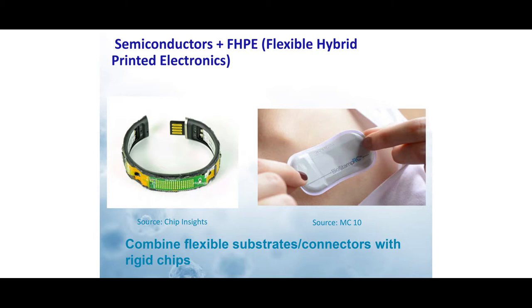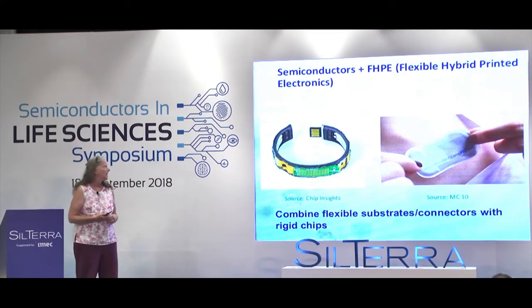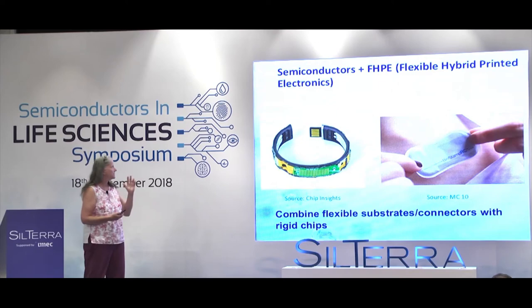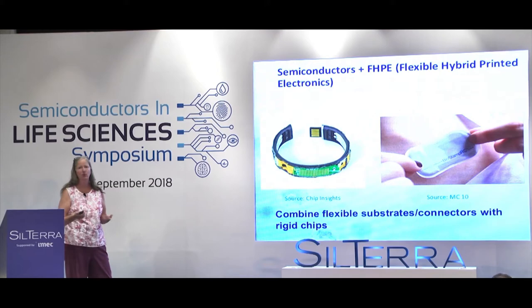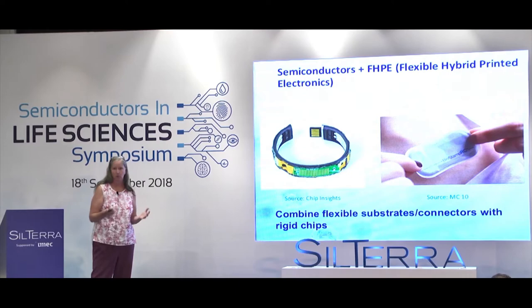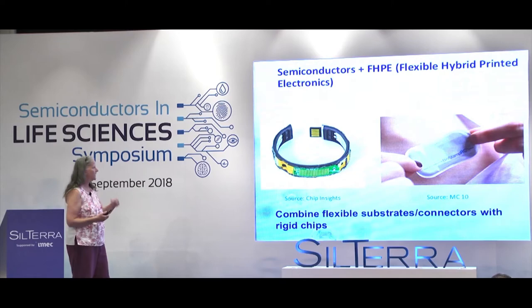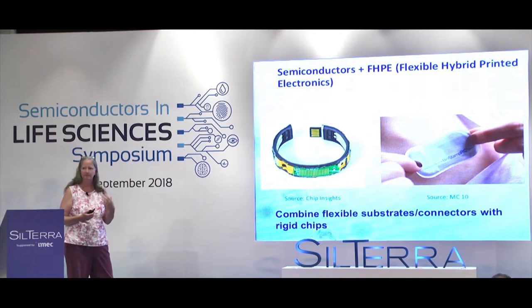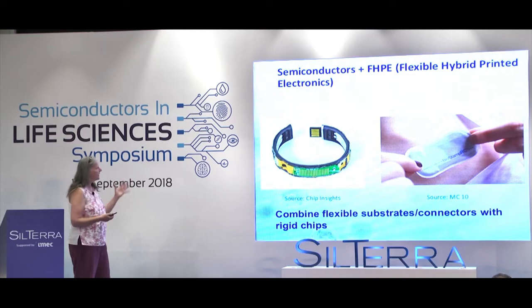Another design and manufacturing issue is that for wearables we typically have to combine chips with flexible hybrid technologies. Our chip is highly manufacturable and proven, but we typically integrate it with something flexible so we can put it on the body or wear it on the wrist. A technology that's quite popular now is combining highly manufacturable rigid chips onto flexible substrates, and these are the kinds of products entering the market today.